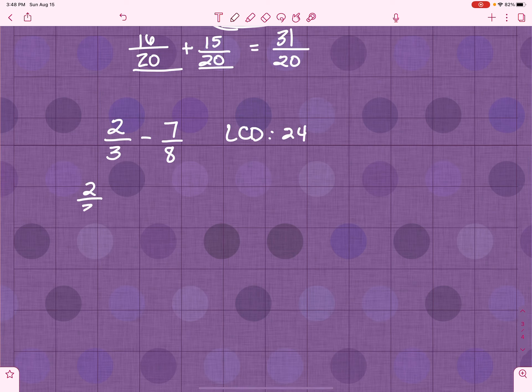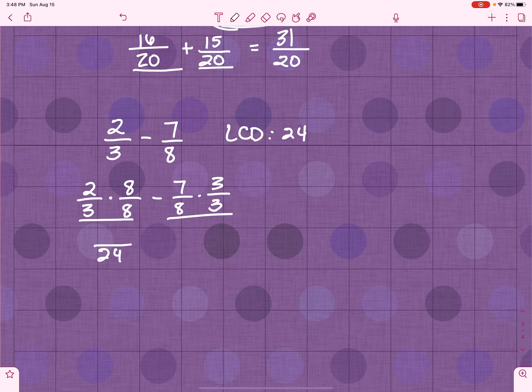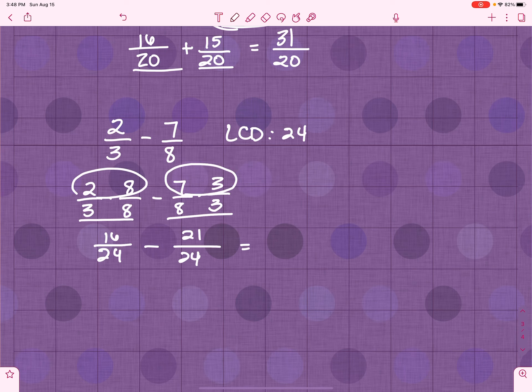So, for 2 3rds, I've got to multiply by 8 over 8. 7 8ths, I've got to multiply by 3 over 3. Because that will give me a 24 in both of those. 2 times 8 is 16. 7 times 3 is 21. That gives me negative 5 24ths. Easy peasy. Lemon squeezy.